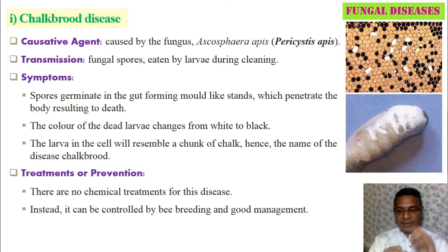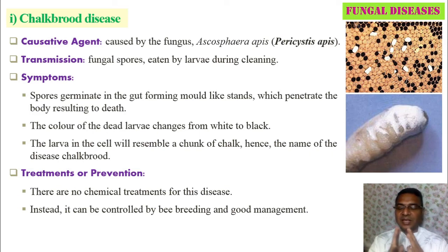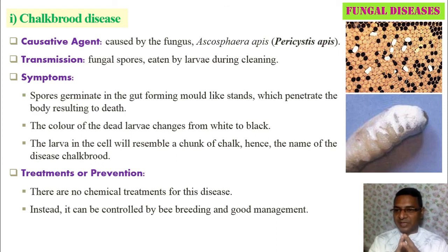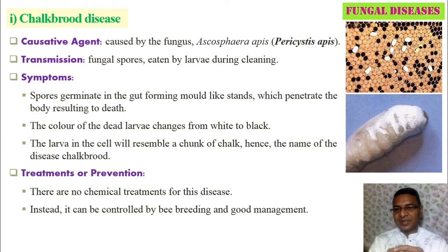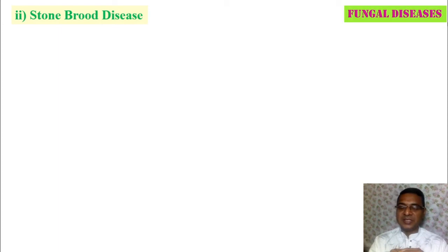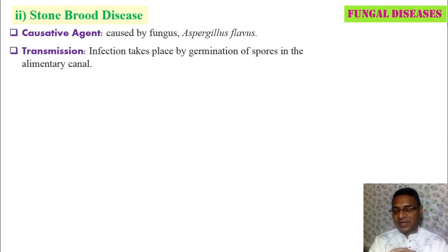There is no chemical treatment for chalk brood disease. Instead, it can be controlled by bee breeding and good management, which totally depends on the beekeeper. The next fungal disease is stone brood disease, caused by the fungus Aspergillus flavus.